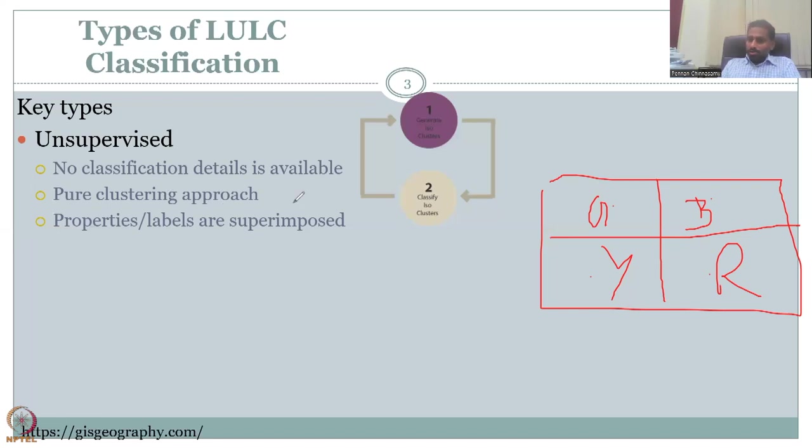So pure clustering approach is applied by the computer. It will take all the greens and cluster it into one group, take all the blues clustered into one group, and then give you the output properties. Labels are superimposed. So the labels, we don't know once the color comes, then we think about it and say, oh, there cannot be, for example, as I said, the Bombay or Mumbai sky view application, we definitely know that it is not water. Then I'll say, okay, that blue is tarp because that is my field experience, a personal experience from the field.